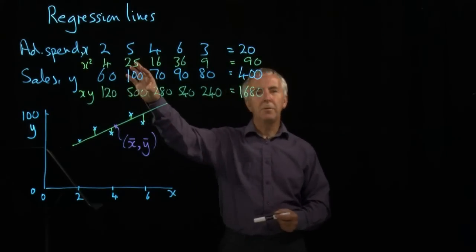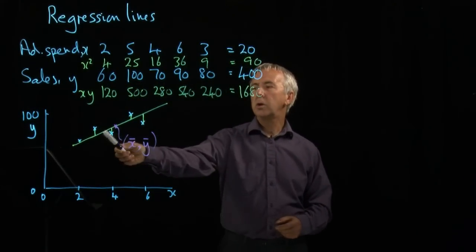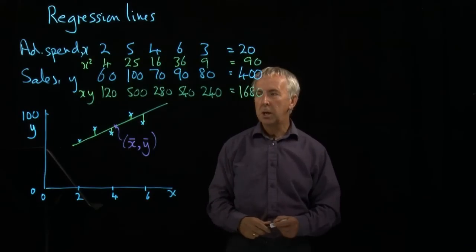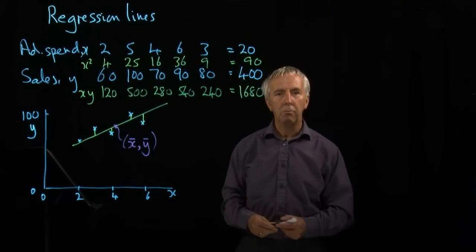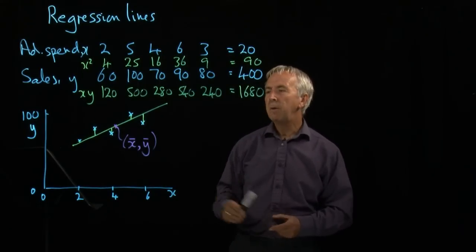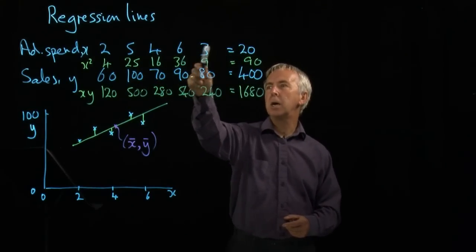We found previously that when we have some data relating x and y, which is clearly quite well correlated, we can draw a line of best fit, also called a regression line, and we can find out the equation of this straight line. And for this particular set of data,